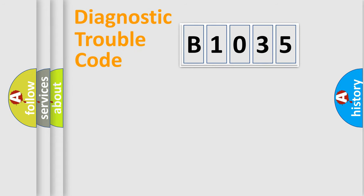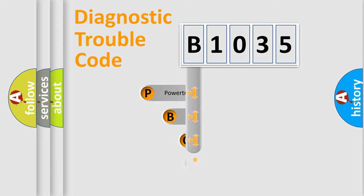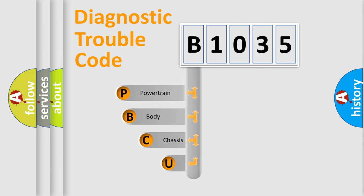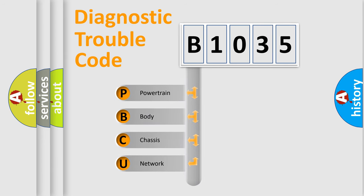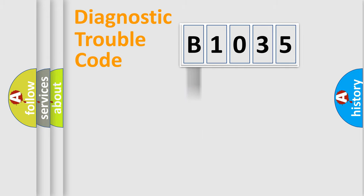Let's do this. First, let's look at the history of diagnostic fault code composition according to the OBD2 protocol, which is unified for all automakers since 2000. We divide the electric system of the automobile into four basic units: Powertrain, Body, Chassis, and Network.